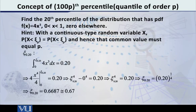Let me give you an example. Suppose that the pdf is given by f of x is equal to 4x cube and x is going from 0 to 1. And we want to find the 20th percentile or in other words, the quantile of order 0.2. So, we will simply integrate from 0 to xi 0.2. We will start from 0 because it is starting from 0.